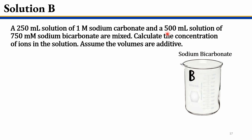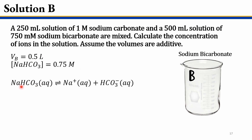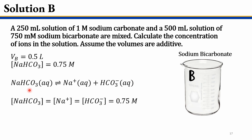Now let's look at solution B. The problem states we have 500 milliliters of 750 millimolar sodium bicarbonate. Converting volume: 500 milliliters divided by 1000 gives 0.5 liters. Converting concentration: 750 millimolar equals 0.75 molar. Recall the dissociation: sodium bicarbonate dissociates into one mole of Na+ and one mole of HCO3 minus — everything is equimolar. So the concentration of Na+ equals the concentration of HCO3 minus, both equal to 0.75 molar.